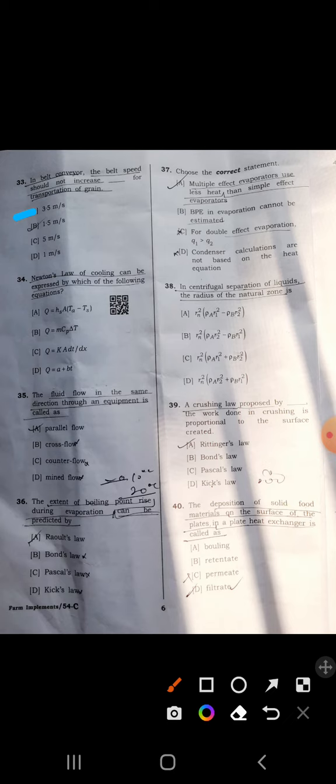Thirty-third: in belt conveyor, the belt speed should not increase by 2.5 to 2.8. Answer is 3.5 is correct, H is right.